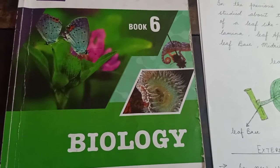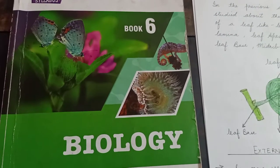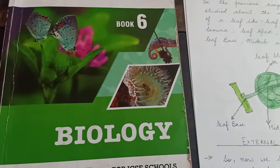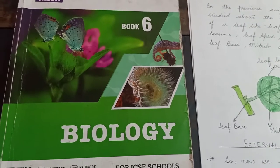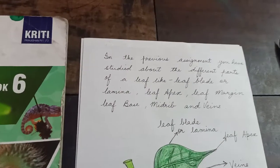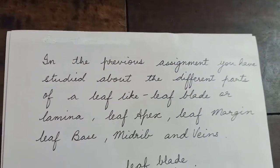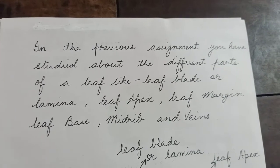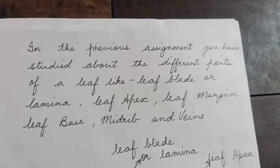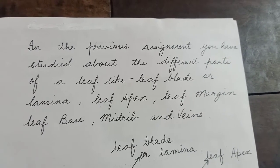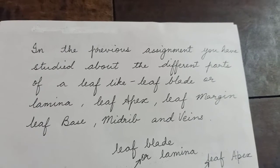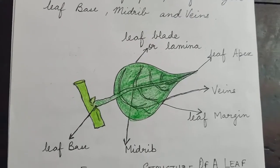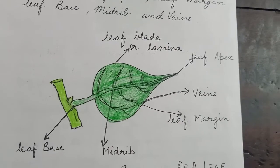Hello students, today I'll teach you the second assignment of biology for class six. As you have seen the first assignment, in that assignment you studied about the different parts of a leaf — like leaf plate or lamina, leaf apex, leaf margin, leaf base, midrib, and veins. Here is an external structure of a leaf where you can see all the different parts.